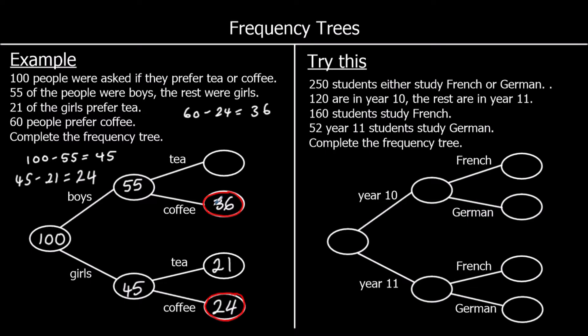So 36 boys must like coffee. And we've got one box missing. There are 55 boys, 36 of them prefer coffee. So 55 minus 36, which is 19. So 19 boys prefer tea.